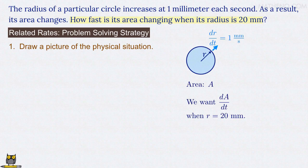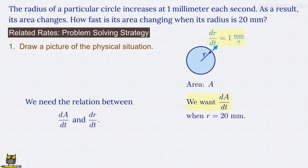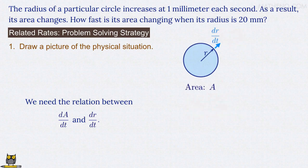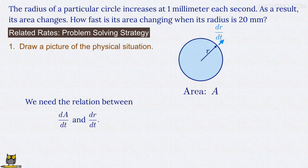So we're given the value of dr/dt, and we're asked something about dA/dt. We thus need to find the relation between those two quantities. Now clearly, as the circle's radius increases, its area increases as well. Furthermore, if the radius increases more quickly, then the circle's area also increases more quickly. The rate at which the area A changes, dA/dt, is thus somehow related to the rate at which the radius r changes, dr/dt. Our job is to find the exact relationship between those two quantities.